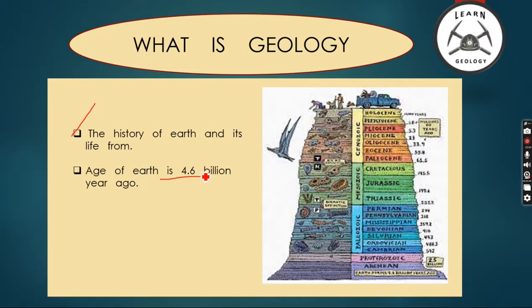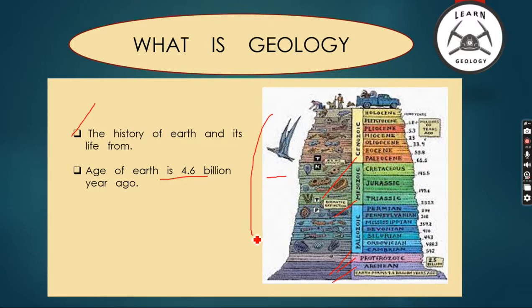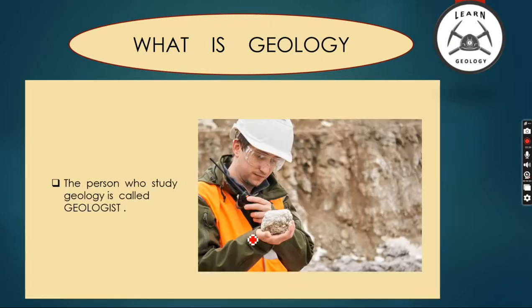The third point is the history of earth and its life forms. The age of the earth is 4.6 billion years. Geologists and scientists divide this 4.6 billion years into five groups based on fossils: Archean, Proterozoic, Paleozoic, Mesozoic, and Cenozoic, which are further divided into subgroups. We will discuss these in a separate lecture.